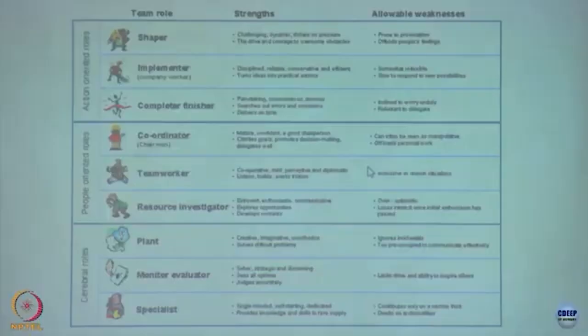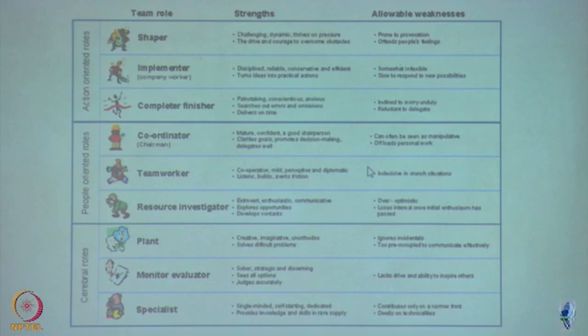These are the 9 roles identified by Belbin. Generally people have a liking for some roles over others. For any team to be successful and to complete its task, there has to be a shaper, completer, and implementer. People with action-oriented roles often become more effective leaders. People with people-oriented roles generally become good and collegial team members. People with a preference for cerebral roles develop as experts, and team members rely on specific expert advice from them.